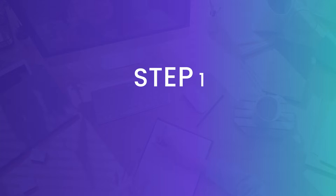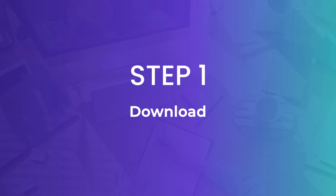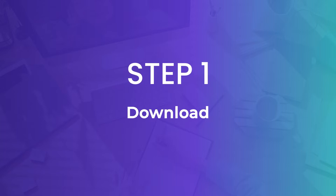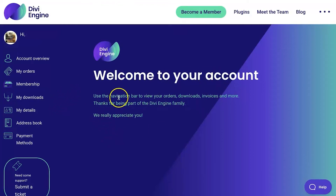Before we download the plugin, we're going to assume that you already have Divi installed and activated on the backend of your site. To download our plugins, all we need to do is log into our Divi Engine dashboard for our account and go ahead and click on My Downloads.